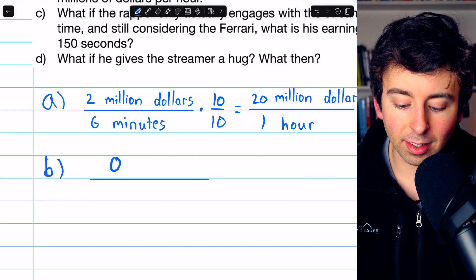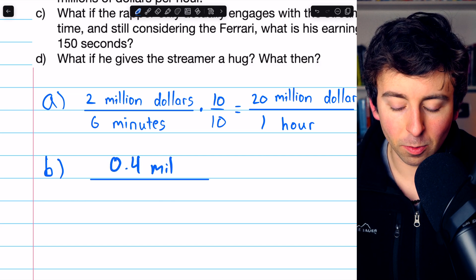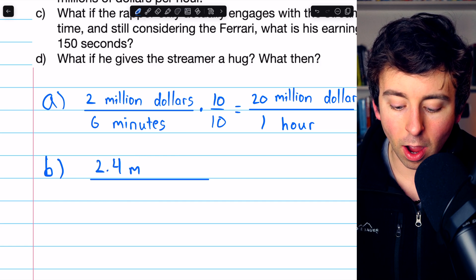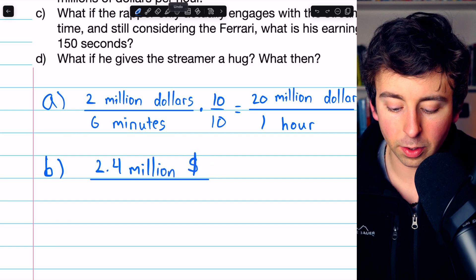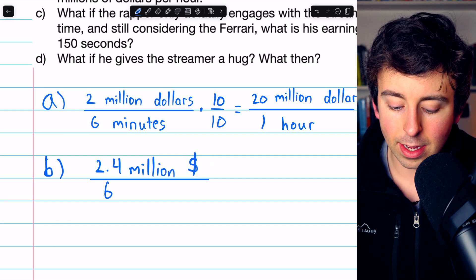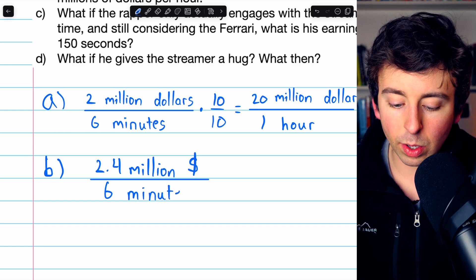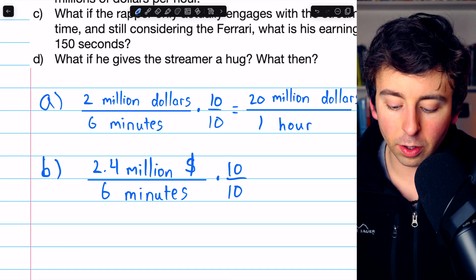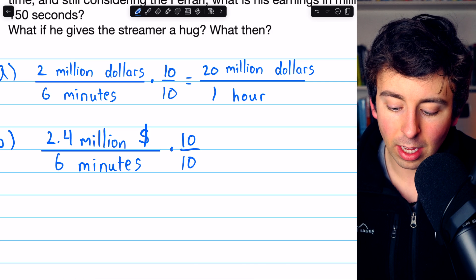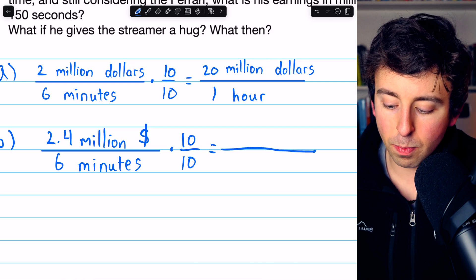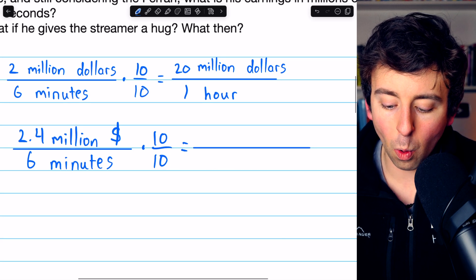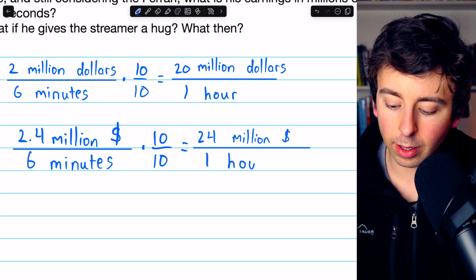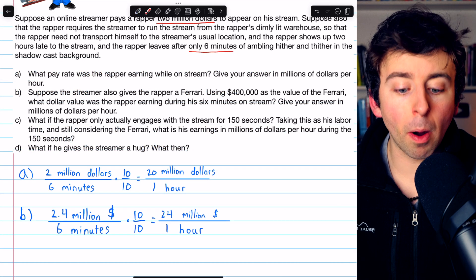Now $400,000 is the same as $0.4 million, so the total he made was $2.4 million over the course of six minutes. We want the rate per hour, so we multiply by 10 over 10. That turns the denominator into 60 minutes, which is one hour. In the numerator, $2.4 million becomes $24 million. So our hourly pay rate for Part B is $24 million per hour.